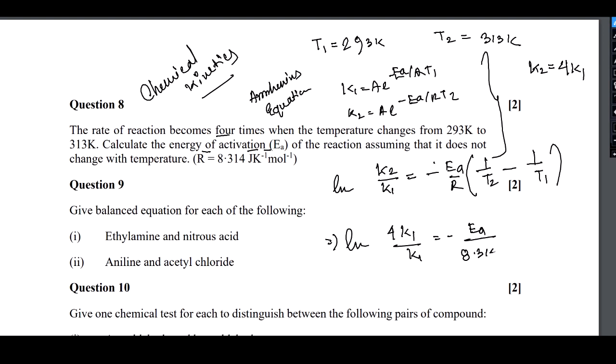Writing that, we get ln of 4K1 divided by K1 equals minus Ea divided by R, which is 8.314 Joules per mole per Kelvin, times 1 by T2 minus 1 by T1. That becomes 1 by 313 minus 1 by 293, which equals (313 minus 293) divided by (313 times 293). When that minus comes, it becomes plus. After calculating, k1 cancels out, and solving for Ea we get 52,869.96 Joules per mole.